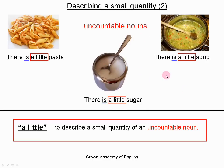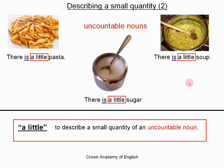So to summarize: these two rules are easy. It is easy to know when we use 'a little' and when we use 'a few' if we know the difference between an uncountable noun and a countable noun. So when you learn a new noun, you must also learn if it is countable or uncountable.